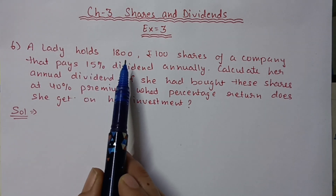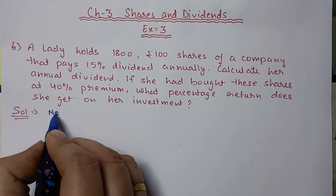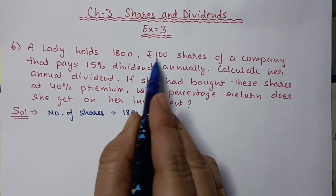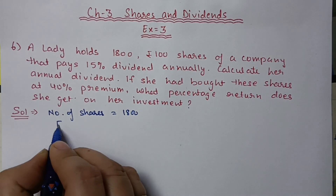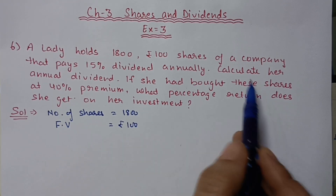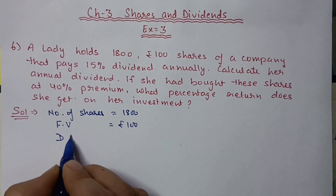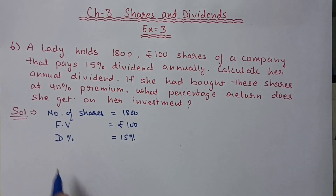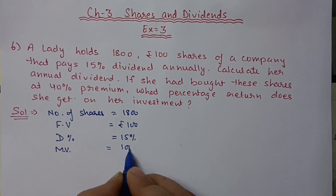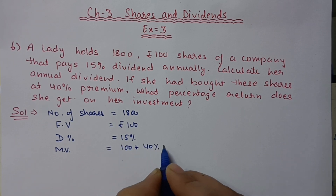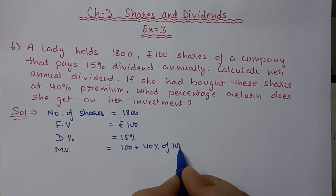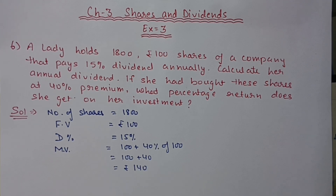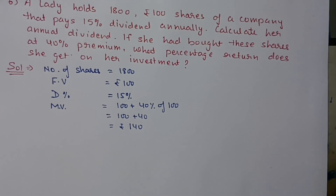The lady holds 1800 shares, so the number of shares is 1800. The face value is 100 rupees per share. The dividend rate is 15%. She had bought these shares at 40% premium, so the market value will be 100 rupees plus 40% of 100 rupees. 40% of 100 rupees is 40, so the market value is 140 rupees. Now we have to calculate the annual dividend.